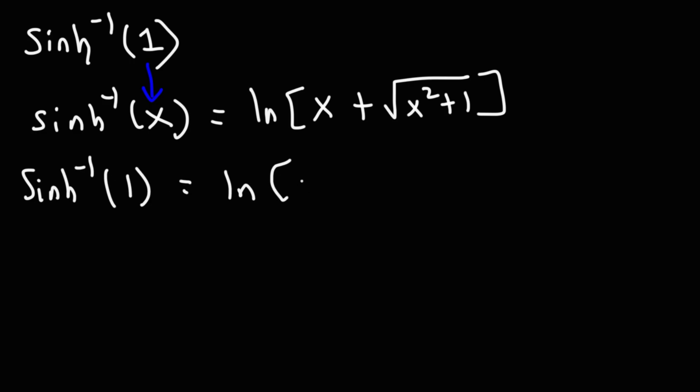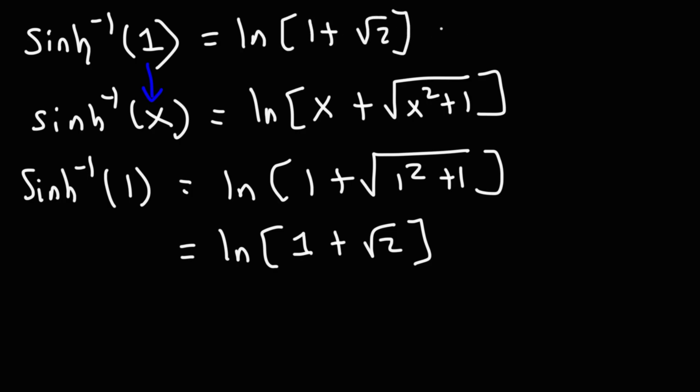So this is going to be ln 1 plus the square root of 1 squared plus 1. So this simplifies to the natural log of 1 plus the square root of 2. So that is the exact answer. But if we want to get the decimal equivalent of that, we can plug it into a calculator. And that's going to be about 0.88137.